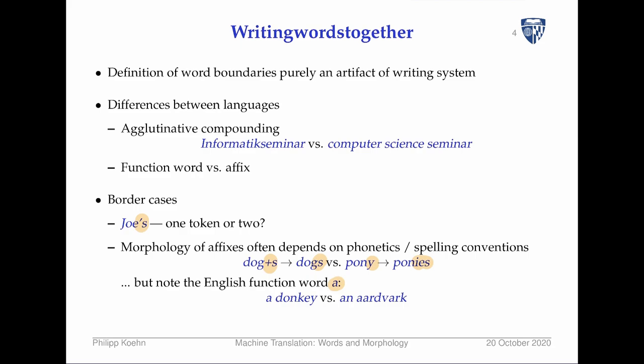Another example is the function word 'a', which changes to 'an' when the following noun begins with a vowel sound. Interestingly, it's not the letter that matters but the pronunciation — a good example is 'an hour', where the 'h' is not pronounced.